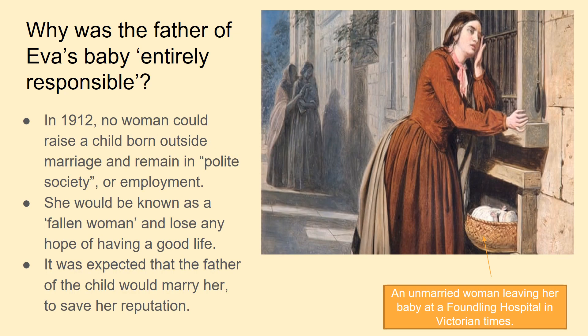Mrs Birling at the end of Act 2 has said that the father of Eva's baby is entirely responsible, which is an example of dramatic irony because the audience and pretty much everyone else on the stage at this point — except Mrs Birling — has clocked that the father of Eva's baby is Eric. He's been acting incredibly shifty all night, he's been downing bottle after bottle of port, he's squiffy and clearly he's recognised he's done something wrong.